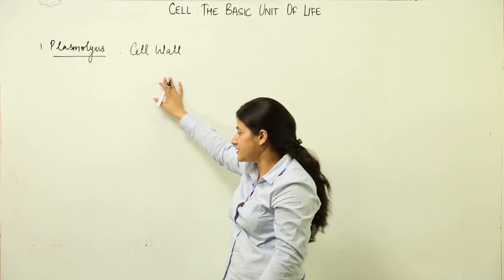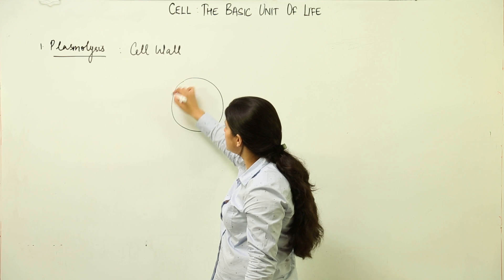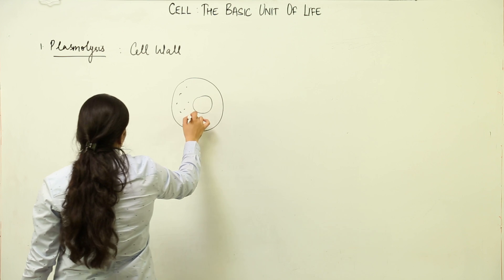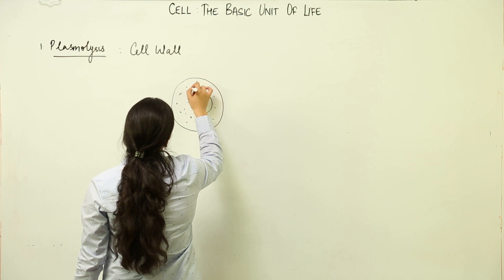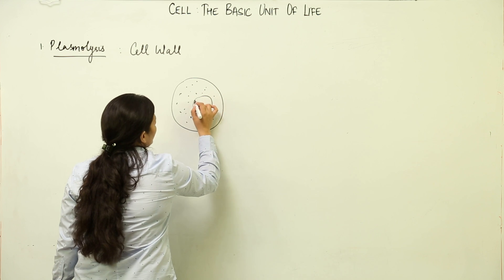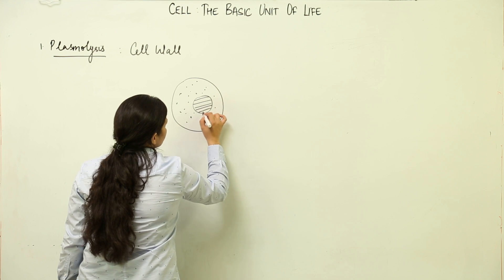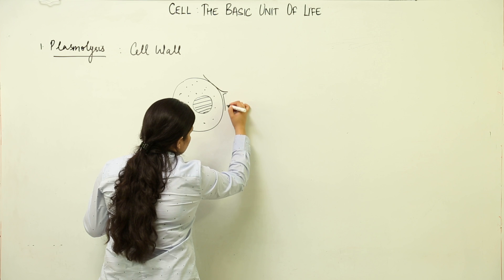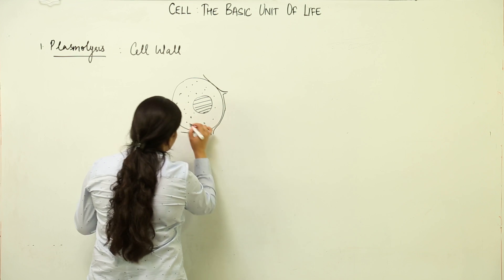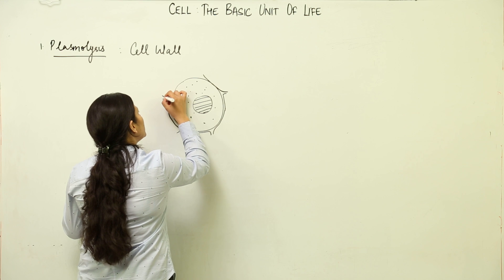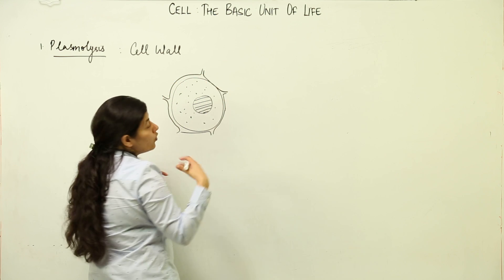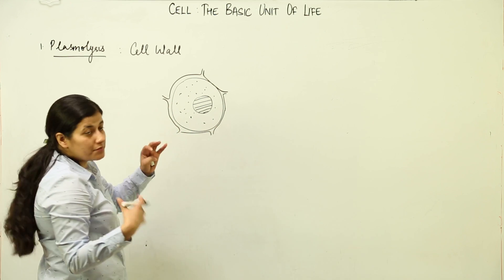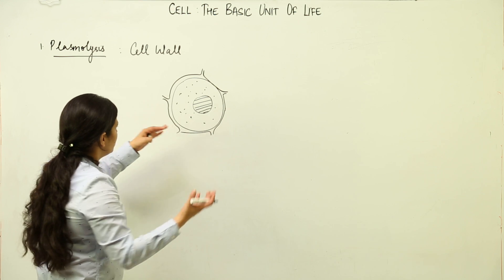Let's draw the structure of a plant cell. This is the plasma membrane; here lies the huge nucleus. There are organelles — we're not going to consider those here. This is the lightly stained cytoplasm and the darkly stained nucleus. Outside the plasma membrane there is a cellulosic cell wall. This is the typical plant cell. You can practice drawing it because the more you draw, the more you learn.